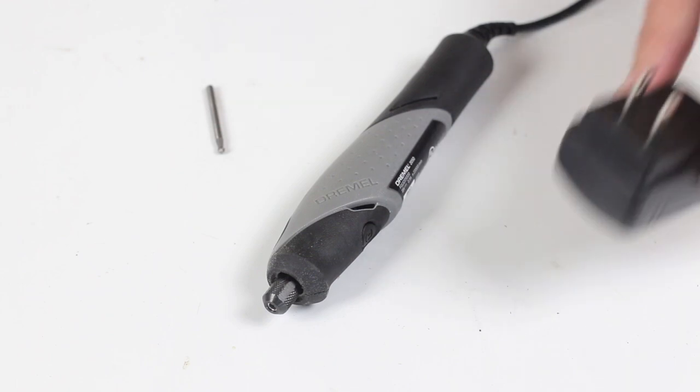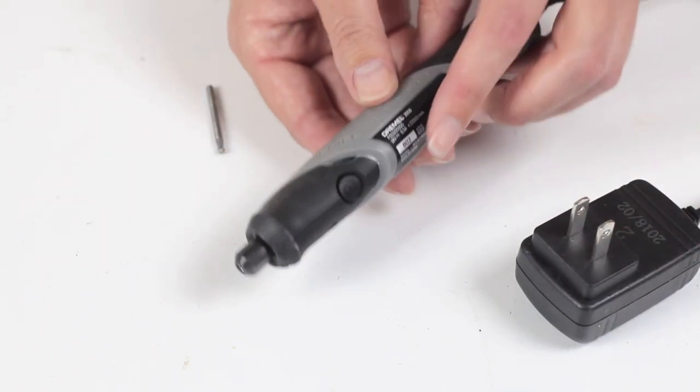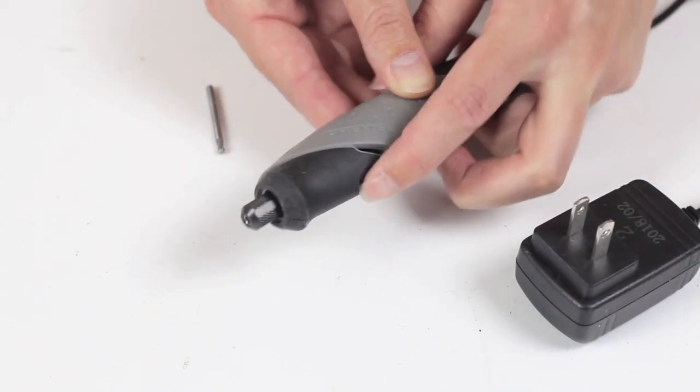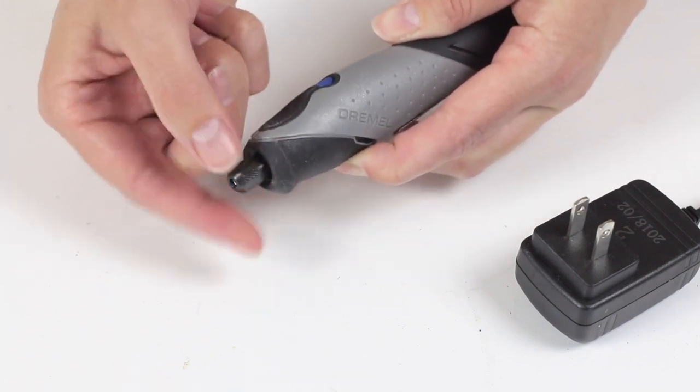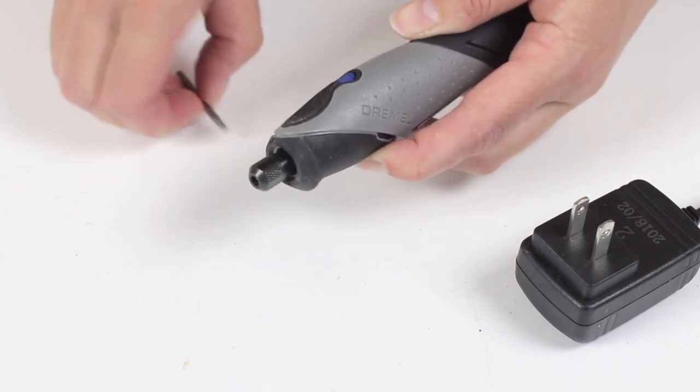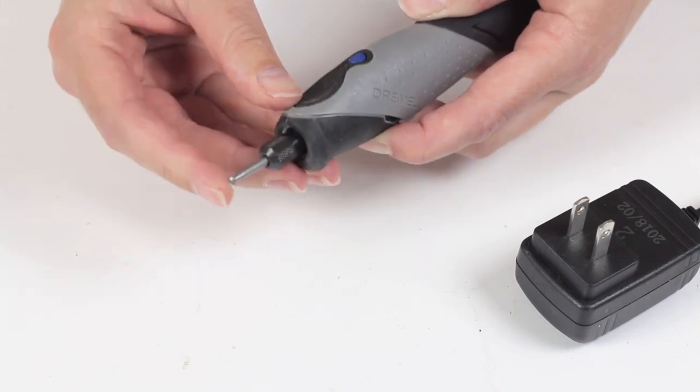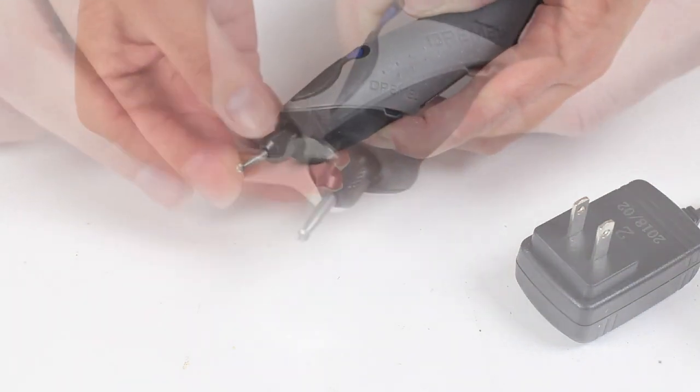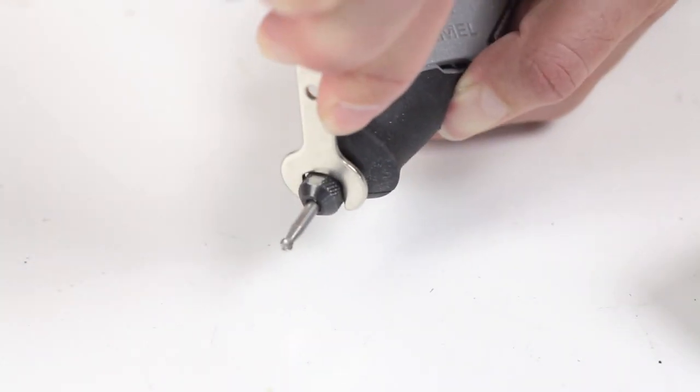To insert the bit, first make sure the tool is unplugged. Press the shaft lock button on the underside of the tool, and then twist open the collet nut. Place the bit fully into the opening, and then tighten the collet nut first with your fingers, and then with the tool's wrench.